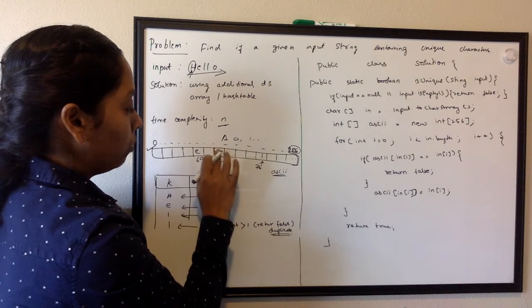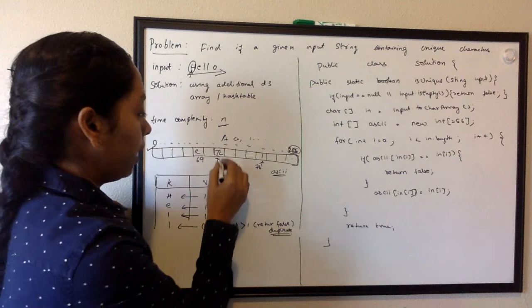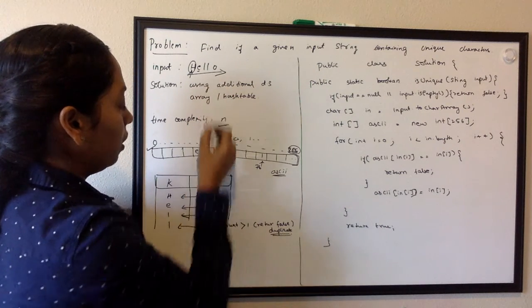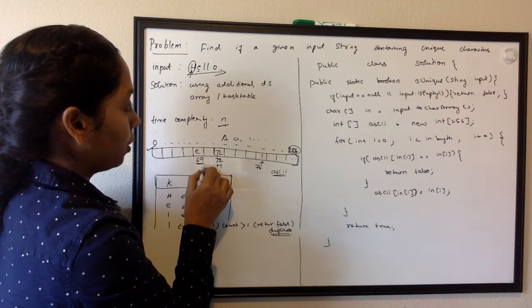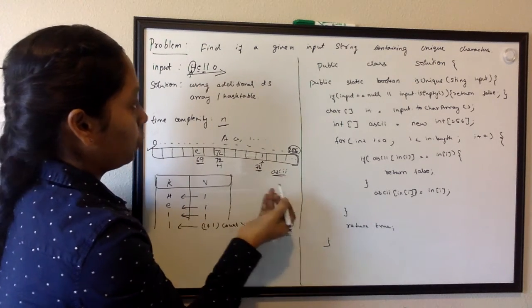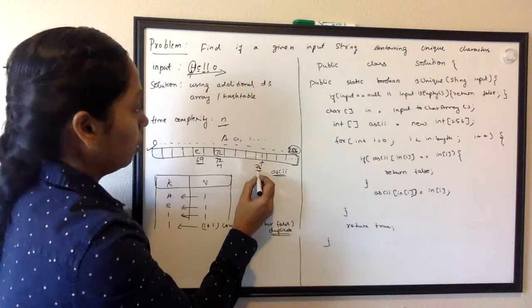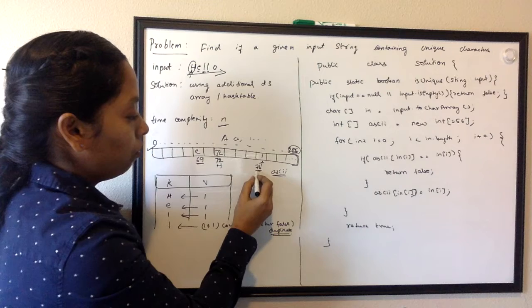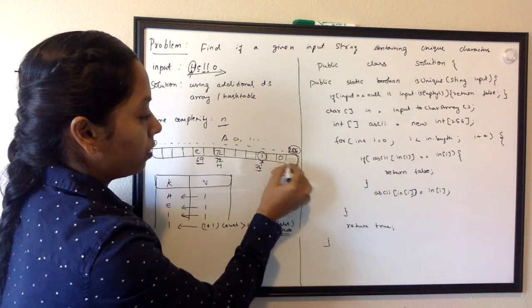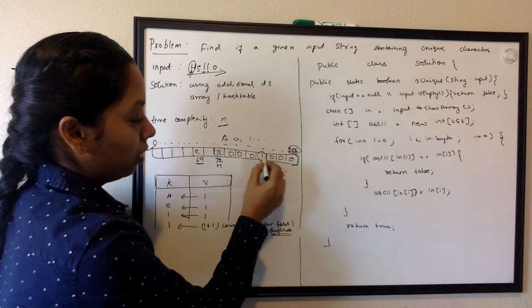When we find the H element, then find E, the second element, and input into the 69th position. Then input L into the 76th position. When you try to input another L, we know this is already filled up, right? This will no longer be zero.